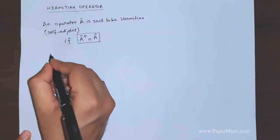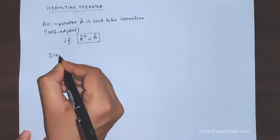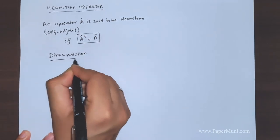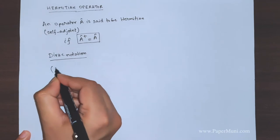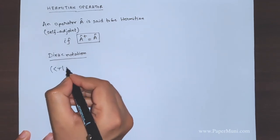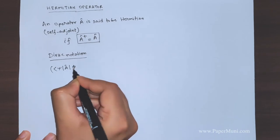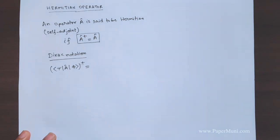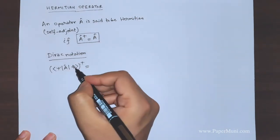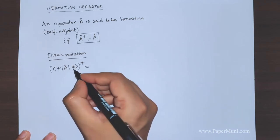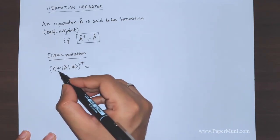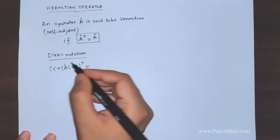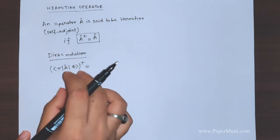In Dirac notation — also called bracket notation — we write down the same condition. In Dirac notation, when we write this condition it looks like this: you take A dagger. We have already noted that you can consider ket vectors as column vectors, bra vectors as row matrices, and the operator as a square matrix. So when we take A dagger we rearrange them.